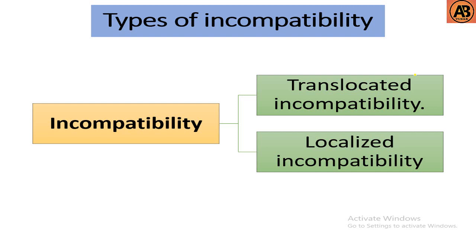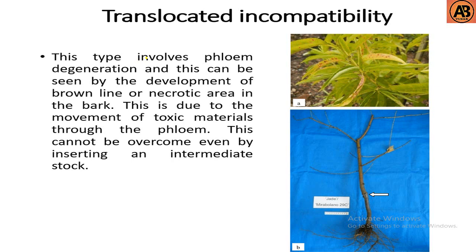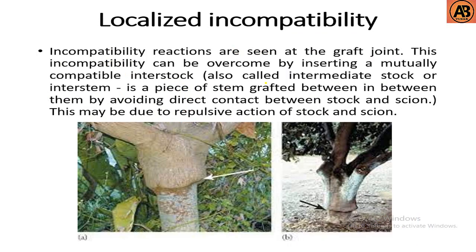There are generally two types of incompatibility: translocated incompatibility and localized incompatibility. Translocated incompatibility involves phloem degeneration, which can be seen by the development of a brown line or necrotic area in the bark. This is due to the movement of toxic materials through the phloem. This cannot be overcome even by inserting an intermediate stock. We can see in the picture spots on the lip and bark caused by phloem degeneration during the graft union.